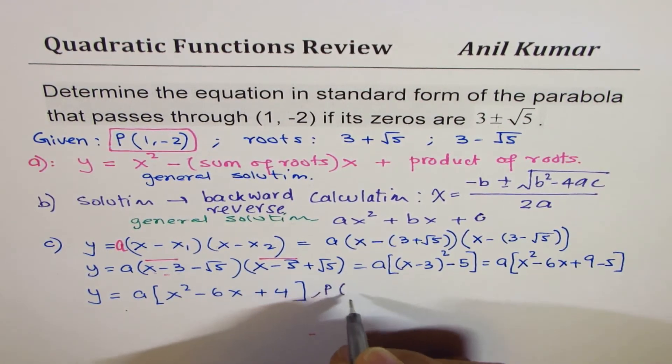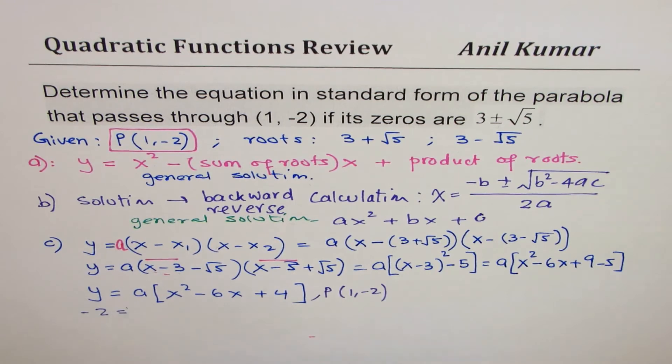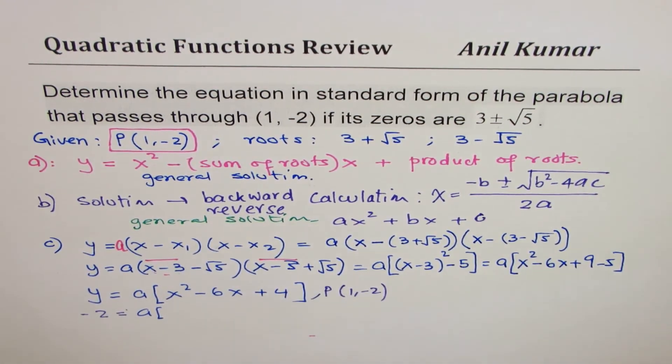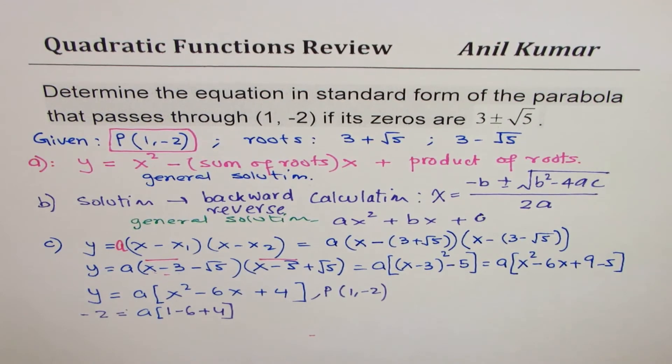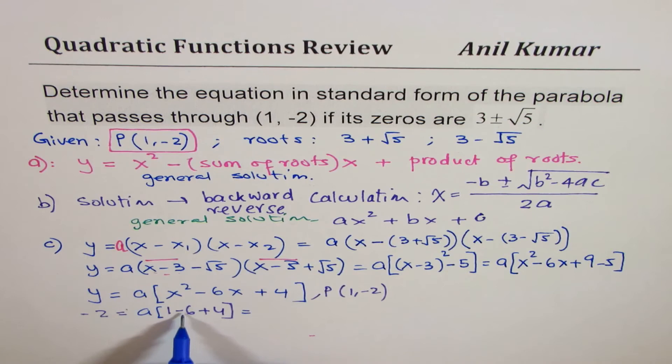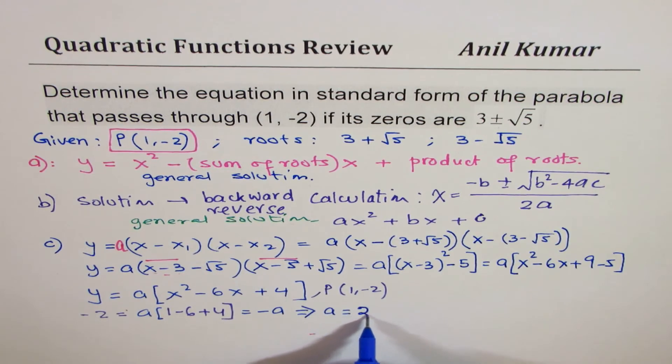So if I write -2 for y, I have a times x is 1, so I'm writing this as: -2 = a(1 - 6 + 4). That is to say it is 5 - 6 = -1, so it is -a. So from here you get the value of a = 2.